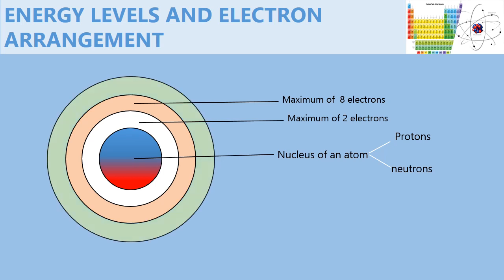Once we have 8 electrons in this energy level, we move on to the third, which can also hold a maximum of 8 electrons. Basically, this is how we are going to be drawing an atom. Remember, it is just a representation of an atom.